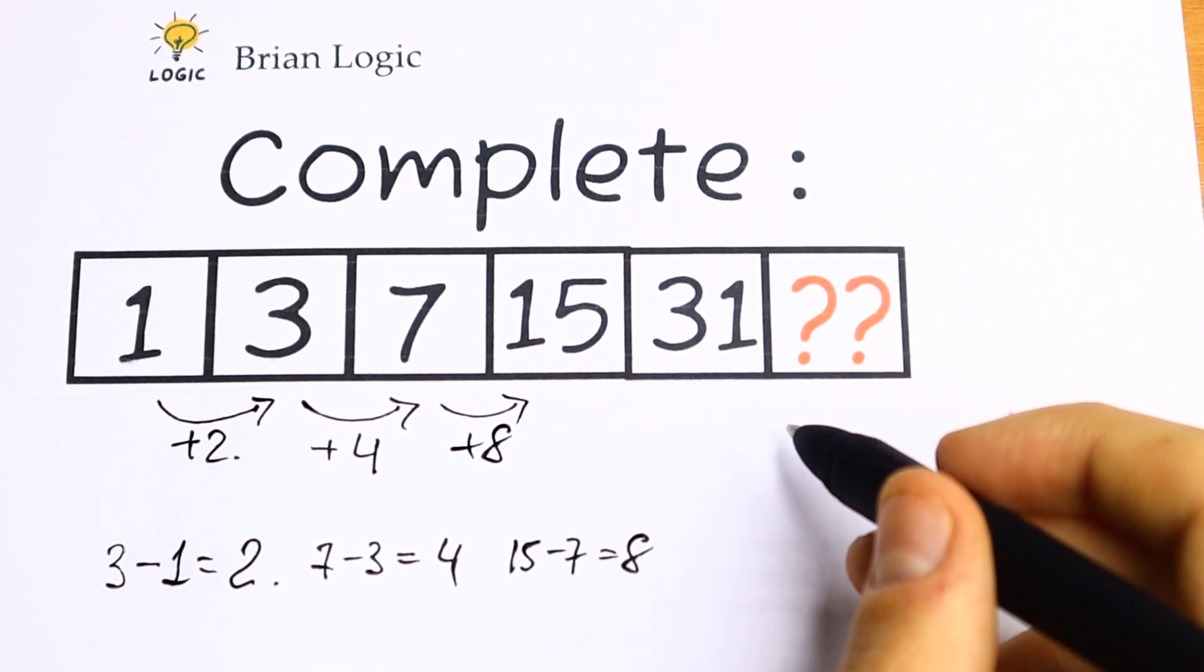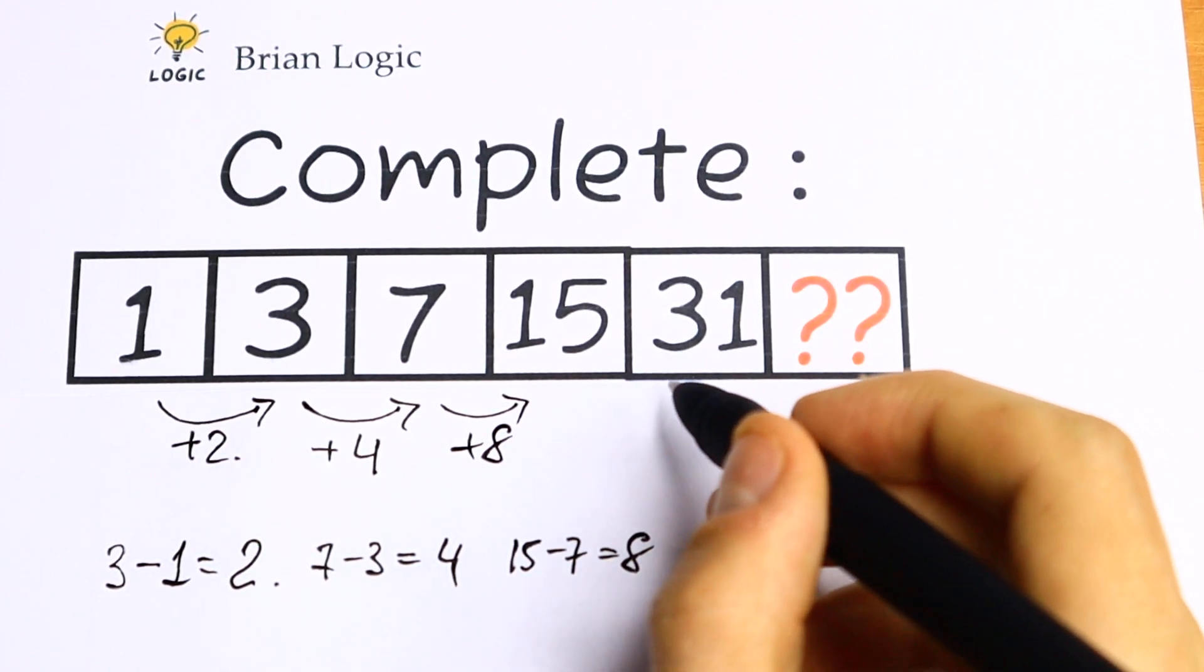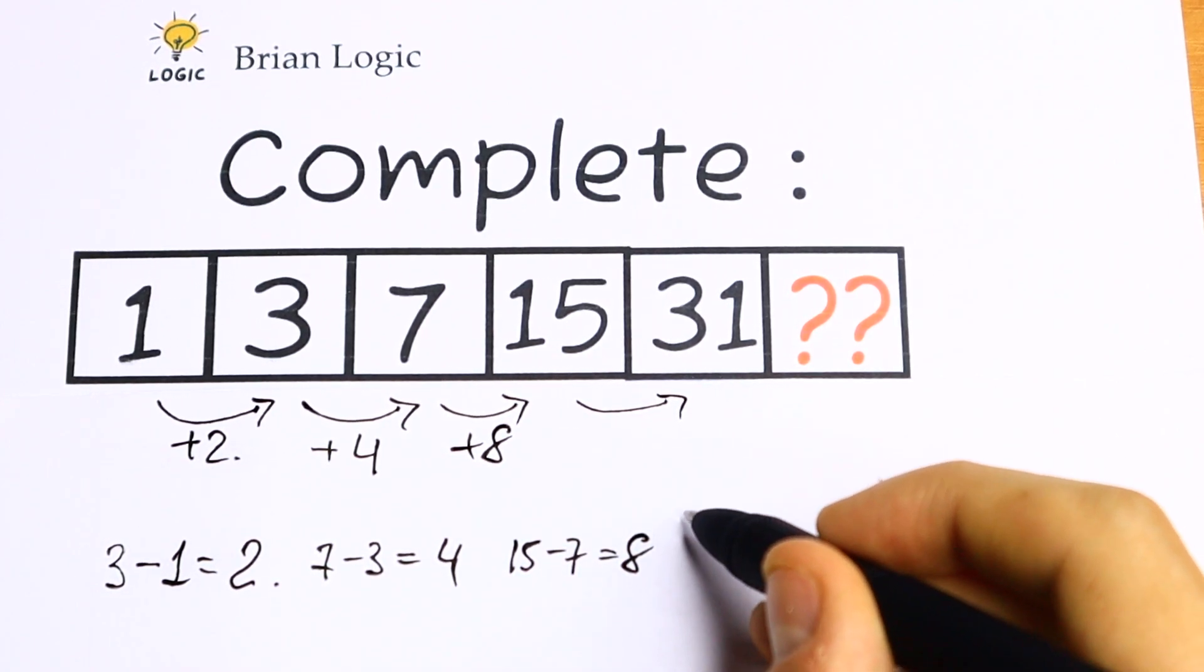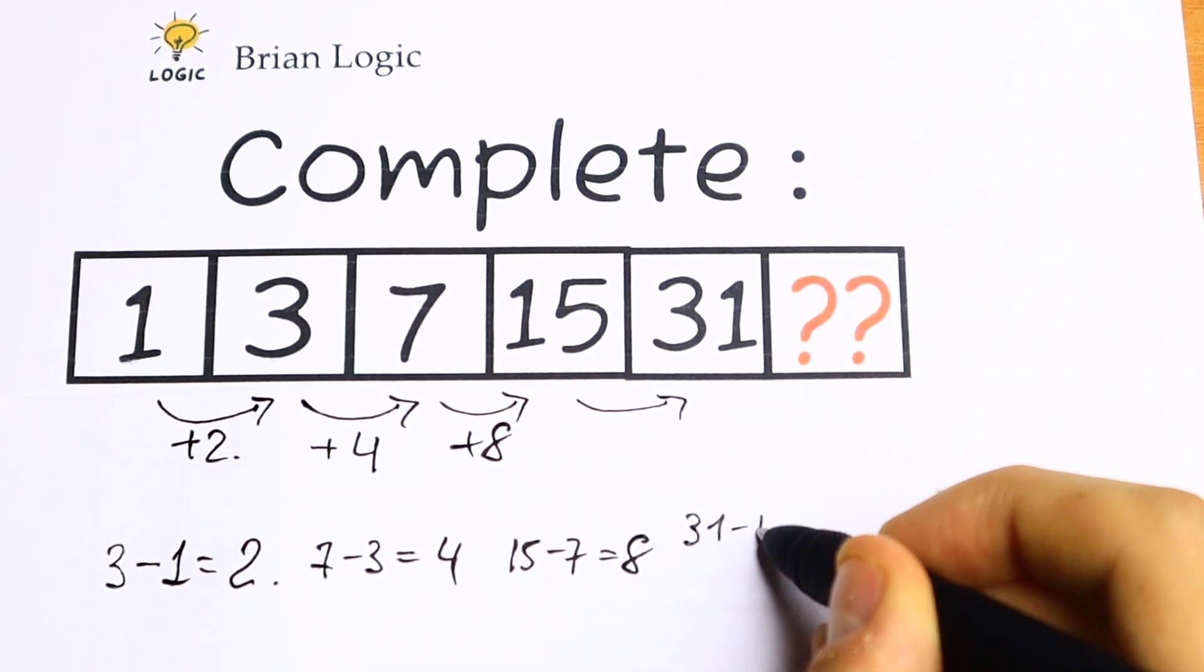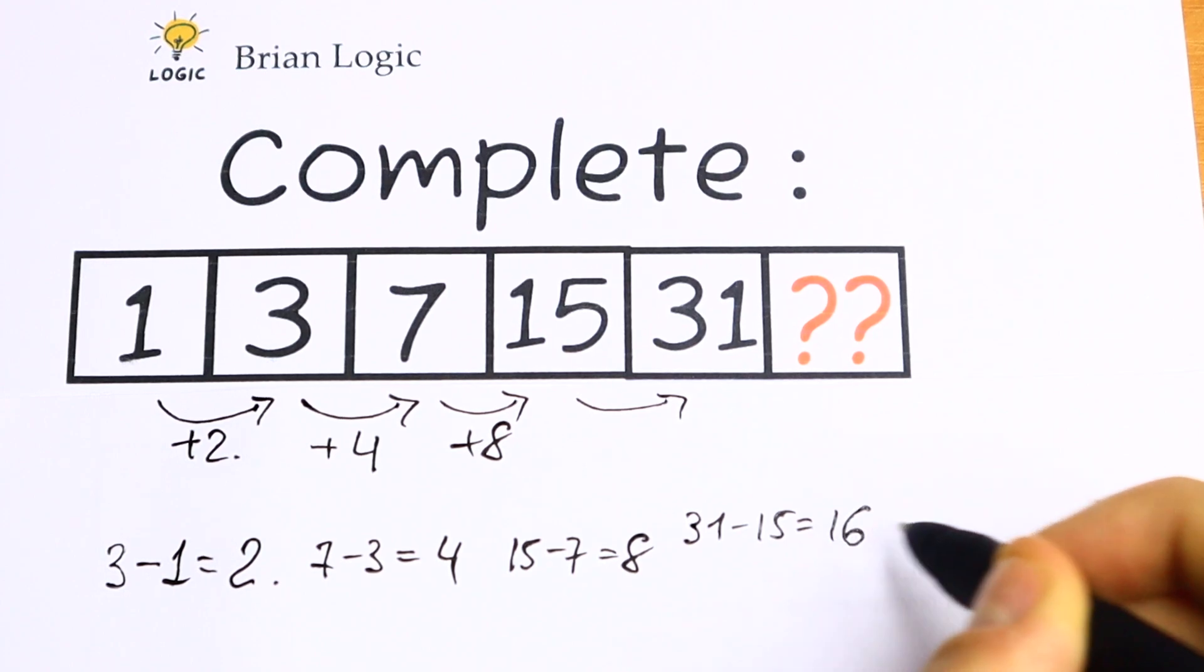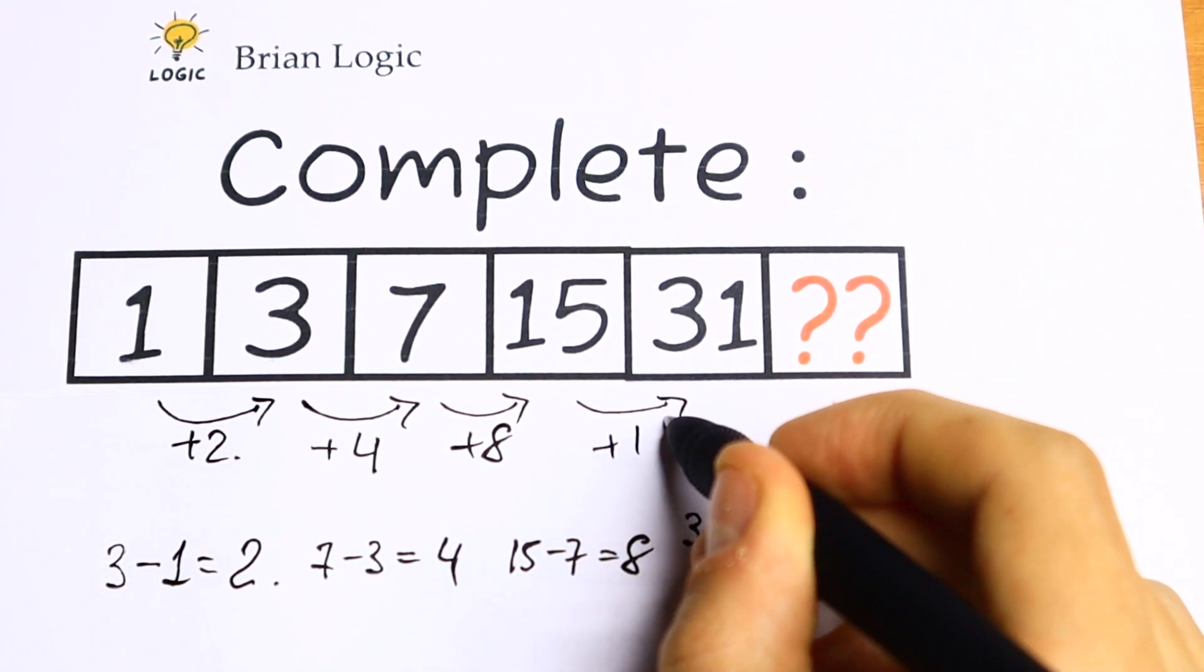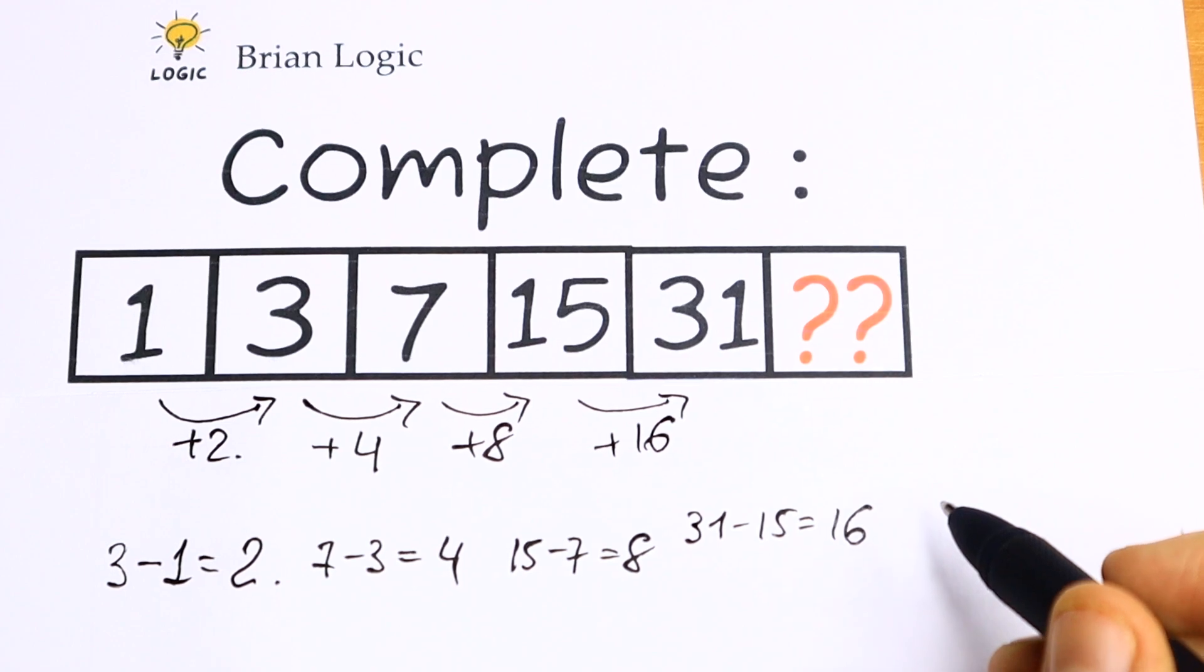Let's use the same logic once more. If we subtract 15 from 31, we get 16. So we need to add 16 to 15 to get 31.